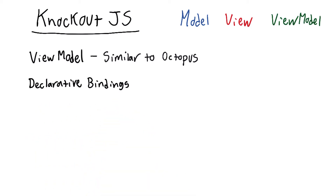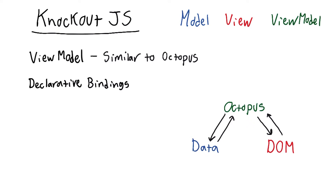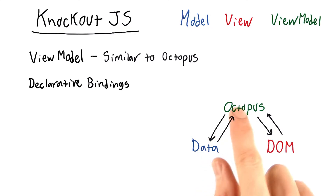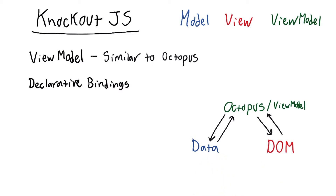Next, we have declarative bindings. Up until now, you've been connecting your DOM elements with your data in the model by writing code in the octopus, and probably there have been a few times that it's seemed especially tedious. A lot of the methods we write in the octopus end up doing the same old thing, simply passing a value this way or that way. Now, rather than write all of that tedious logic in the octopus or the view model, Knockout lets you connect these two using bindings that you put in the HTML.